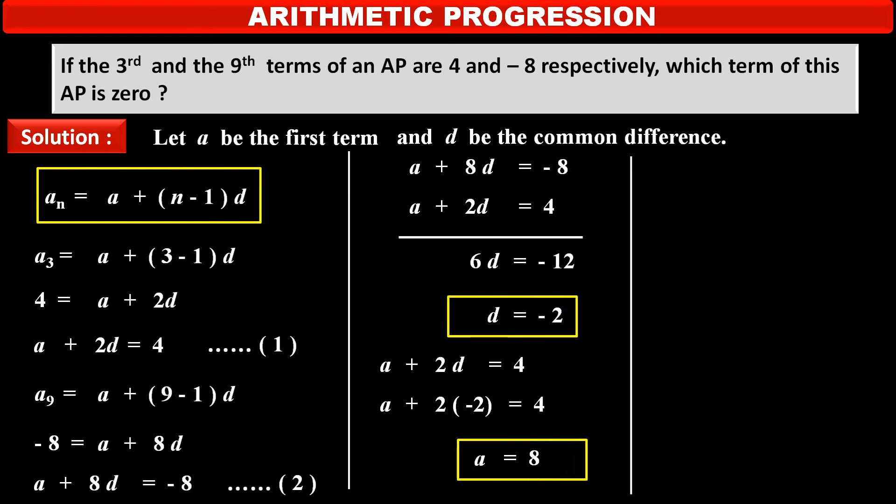Now, we have two values. Value of D as minus 2 and value of A as 8. By using these two values and applying formula of Nth term, we have to find out value of N when Nth term is 0.